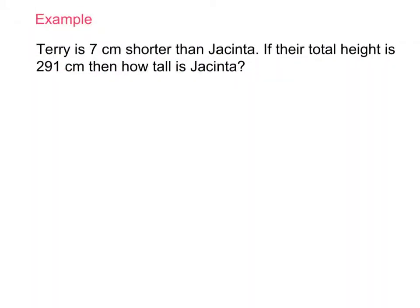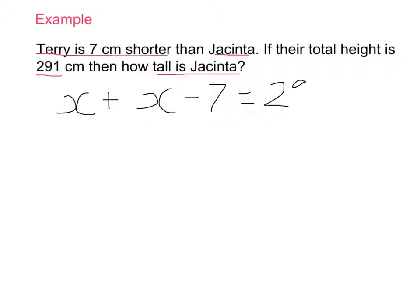Next example: Terry is seven centimetres shorter than Jacinta. If their total height is 291 centimetres, how tall is Jacinta? Key information: Terry is seven centimetres shorter than Jacinta; both heights together equal 291. Jacinta is our unknown, so she is X. Terry is X minus 7. Adding their heights: X plus (X minus 7) equals 291.